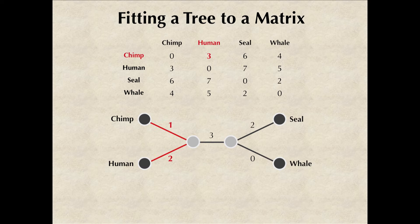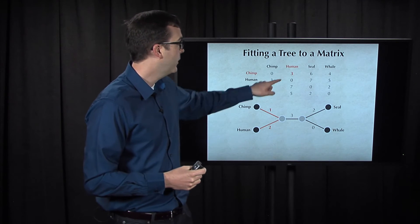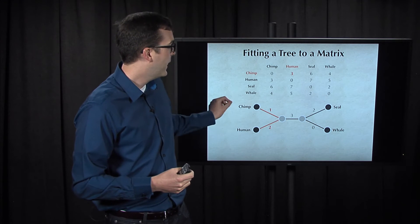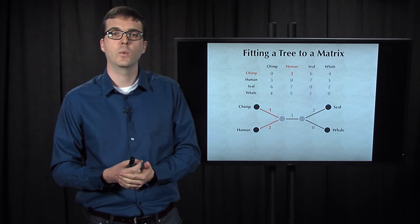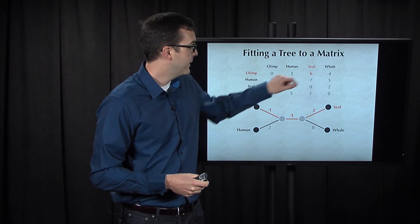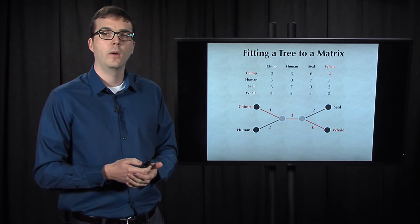We will need to assign weights to the edges of this tree so that the sum of weights along a path that connects two leaves corresponds to the distance matrix value for those two leaves. Here we have weights of one and two, and they combine to give us the distance of three between chimp and human. The distance between chimp and seal is six, and edge weights one, three, and two give us six, and so on.